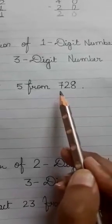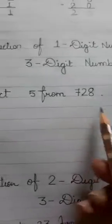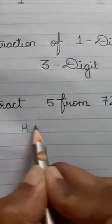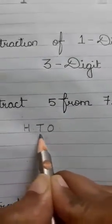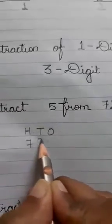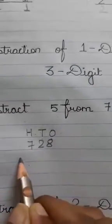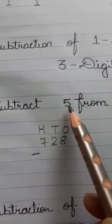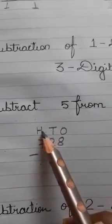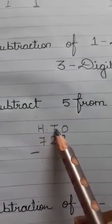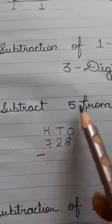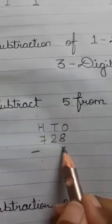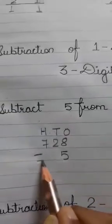Our three-digit number is seven hundred twenty-eight, so we write H T O — hundreds, tens, ones — seven hundred twenty-eight. Now here there is only one digit. So in which place do we write five? Hundreds place? No. Tens place? No. Ones place? Yes. Because it is one digit, it goes in the ones place. So we write five there.